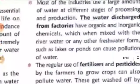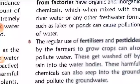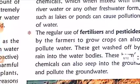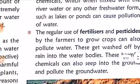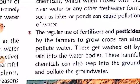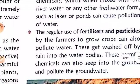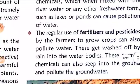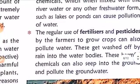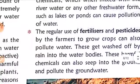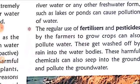Third, the regular use of fertilizers and pesticides by farmers to grow crops also pollutes water. These get washed off by rain into water bodies. These harmful chemicals can also seep into the ground and pollute groundwater. Nowadays farmers use lots of fertilizers and pesticides regularly, and when rain comes, it washes them into the ground, polluting the groundwater.